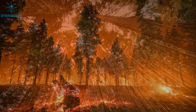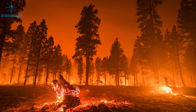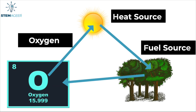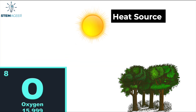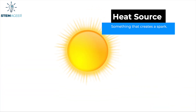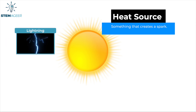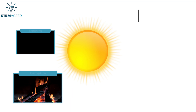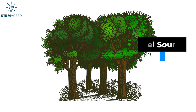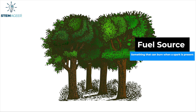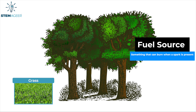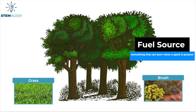So how exactly do wildfires start? There are three key things that need to come together: a heat source, a fuel source, and oxygen. A heat source is something that creates a spark. Heat sources can come from nature, like the sun or lightning, or they can be man-made, like matches or improperly managed campfires. A fuel source is something that can burn when a spark is present, like grass, trees, and even something called brush, which is a type of plant or vegetation.